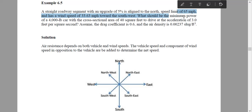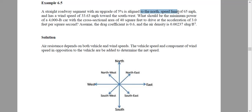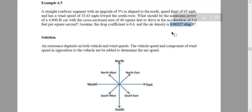The speed limit is 65 miles per hour, meaning the car is expected to run at 65 mph. The wind speed is 33.63 miles per hour toward the southwest. Since we are going north and the wind is coming from the southeast, the component of wind along our direction will resist us — that combined speed is used to calculate air resistance. The car weighs 4000 lb, has a cross-sectional area of 40 square feet, and must maintain an acceleration of 3 feet per second squared. The drag coefficient is 0.6 and air density is 0.00237.